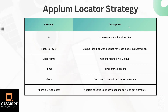Then we have got the accessibility ID. This is a unique identifier and it can be used for cross-platform automation, which means you can use it for Android as well as iOS. Then we have got the class name. It is a generic method and it is not unique, so if you use class name, you will find a number of different elements which have the same class name.